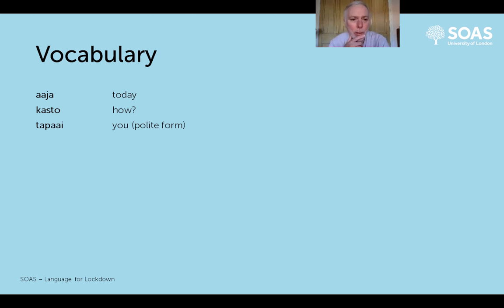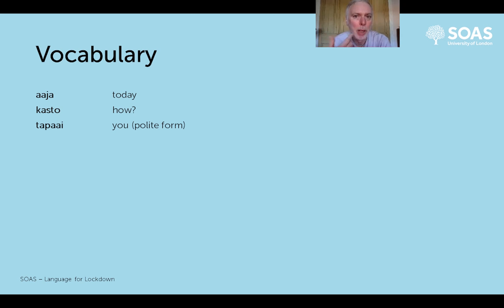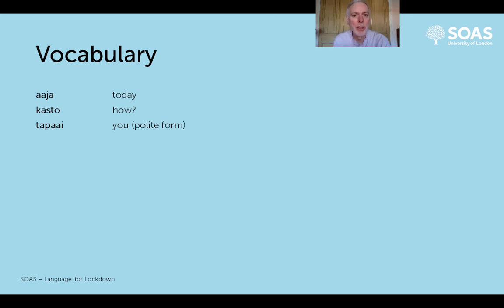The third word is the first of the pronouns we'll meet in this. There are three or four different ways of addressing somebody as 'you'. The most common one in normal polite conversation - not excessively polite, but genteel and normal - is to call somebody 'tapai'.